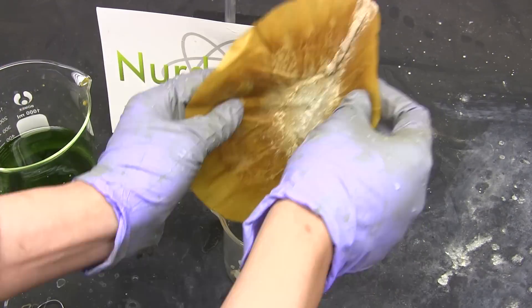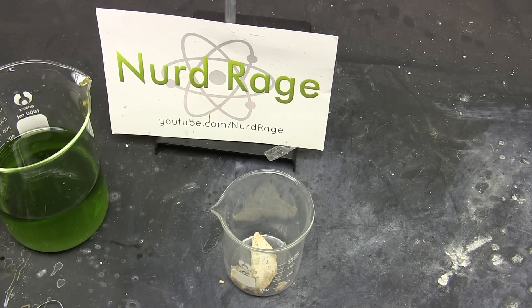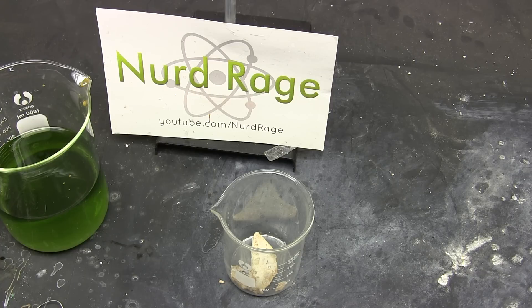Once everything is filtered retrieve the residue of copper 1 chloride. And there you have it, separation of the iron from the copper. Now we need to convert the copper chloride back into the copper metal that went into it.